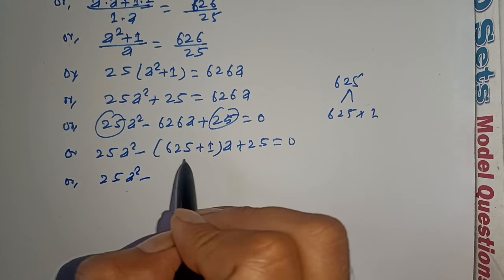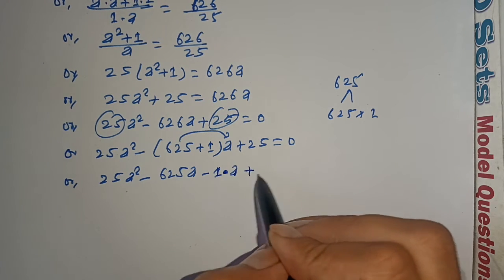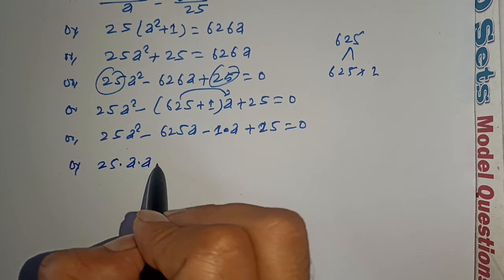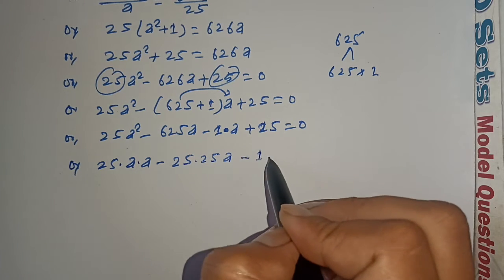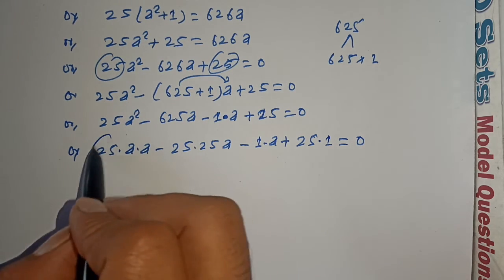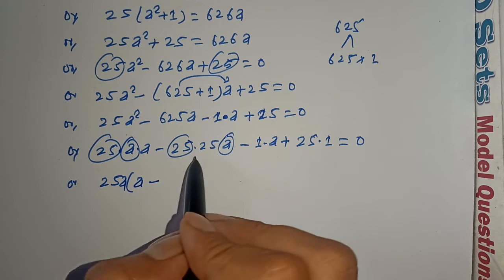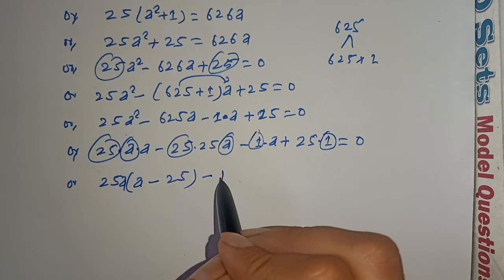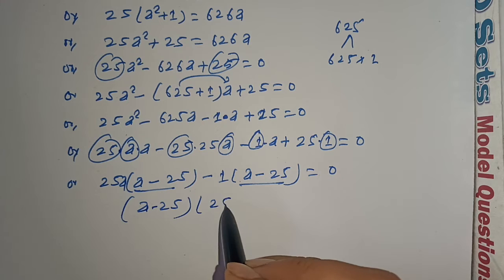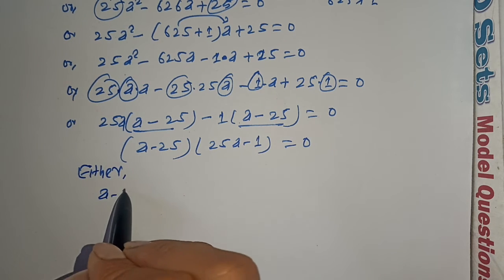Factoring 25a squared minus 625a minus a plus 25 equals zero: take 25a common from first two terms giving 25a times a minus 25, and minus 1 common from last two terms giving minus 1 times a minus 25. So a minus 25 times 25a minus 1 equals zero. Either a minus 25 equals zero or 25a minus 1 equals zero.